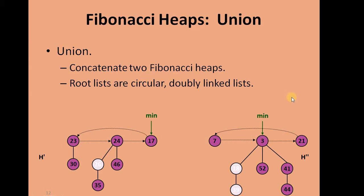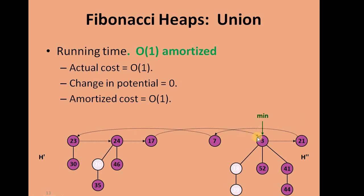We need to concatenate two Fibonacci Heaps — let's call them H-dash and H-double-dash. In H-dash, node 17 is the min node, and in H-double-dash, node 3 is the min node. We join these two using the circular doubly linked list, and the pointers start pointing to root nodes accordingly. The running time of this operation is O(1) because we are simply joining two circular doubly linked lists.